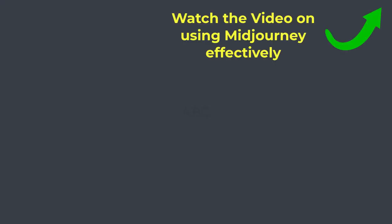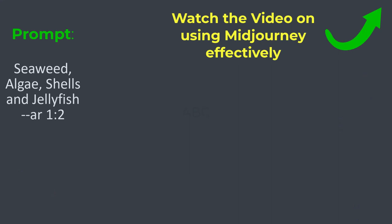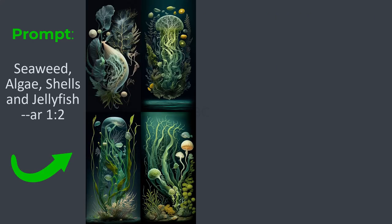I will first use a simple prompt to generate a sea plant and shell — as seaweed, algae, shell and jellyfish — and the aspect ratio is 1:2. We get a good result.